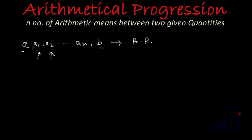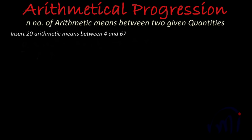So how to find these numbers? If we can find the common difference d between these numbers, we can write the series. To understand how to find this common difference, let me take one example, and while solving that example we will understand better how to find n number of arithmetic means between two given quantities. So let me erase this work.